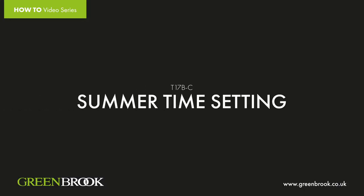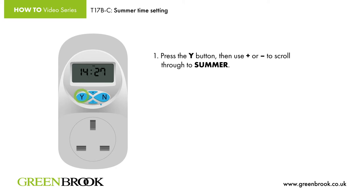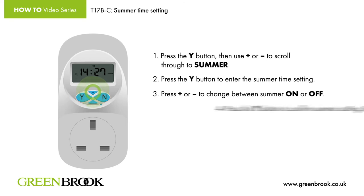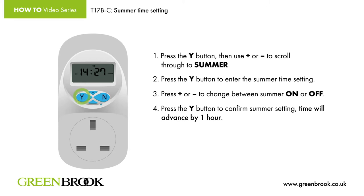Summertime settings. Step 1: Press the Y button, then use plus or minus to scroll through to summer. Step 2: Press the Y button to enter the summertime setting. Step 3: Press plus or minus to change between summer on or off. Step 4: Press the Y button to confirm the summer setting. Time will advance by 1 hour.